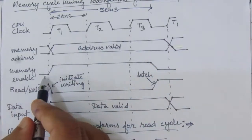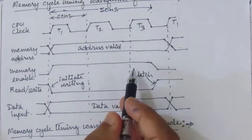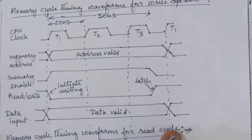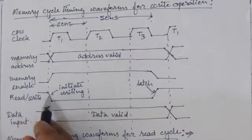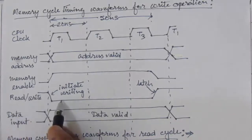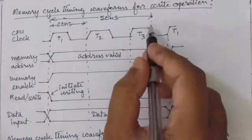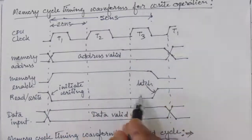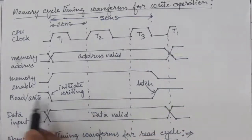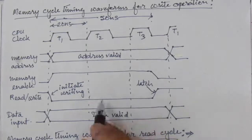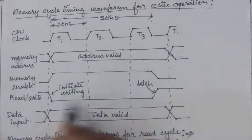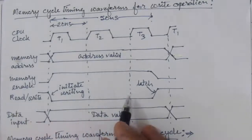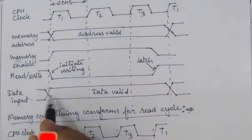Next we have the memory enable signal — whenever we get a high signal here, memory access is enabled. Then we have the read/write line. In the write operation case, we keep this signal low for the 50 nanoseconds duration. When the read/write signal is high it reads; when low it writes. The data input is also active for these three clock cycles.